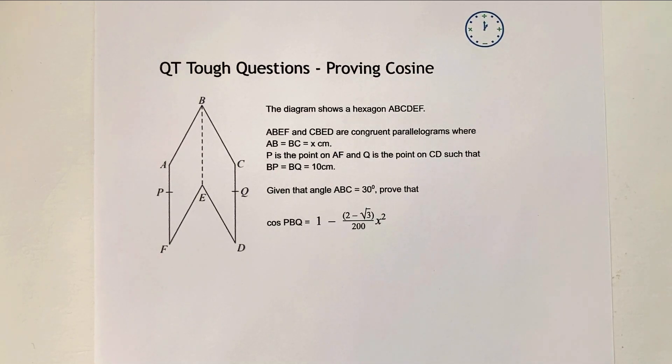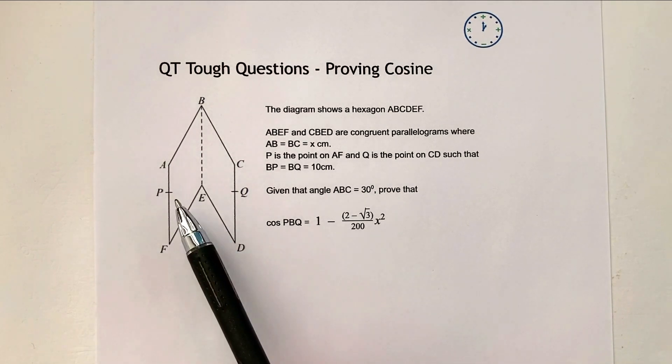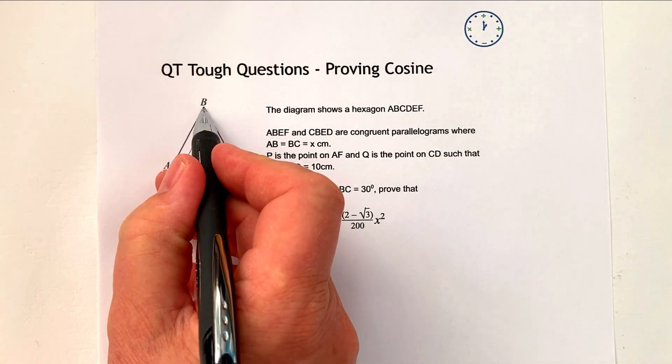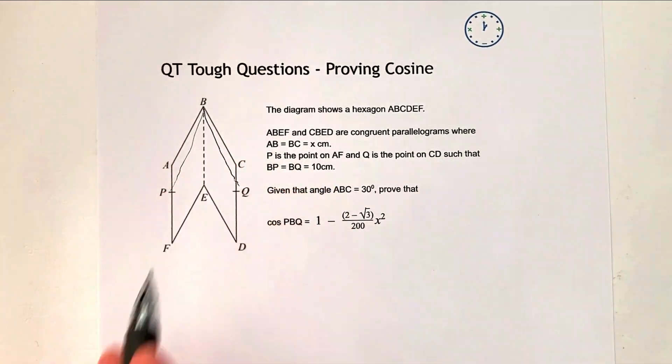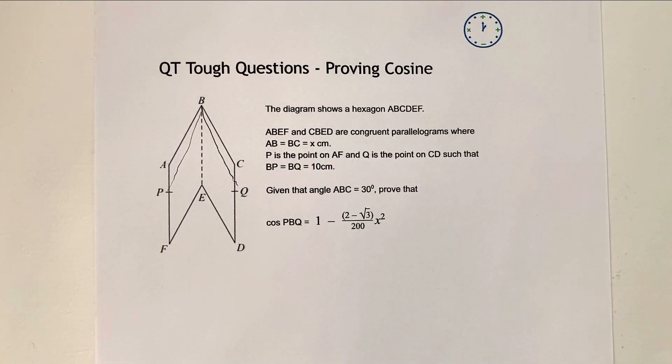Hi, in this particular video, we're being asked to make this proof that the cosine of PBQ which is this angle here. So from P to B down to Q again, it's this angle at the very top, is the equivalent to this. So it looks a little bit tricky to work through.